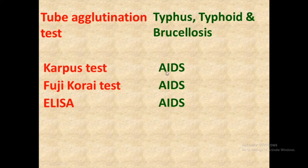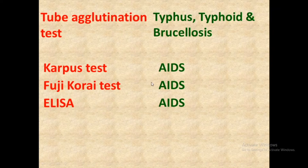For the diagnosis of AIDS — that is HIV AIDS — three different tests are used. First is the Coombs test, second is the Fujikori test, and third is the ELISA test, that is Enzyme-Linked Immunosorbent Assay. You can remember these as KFE: KFE equals AIDS.